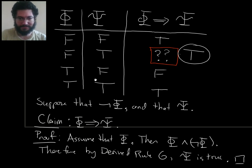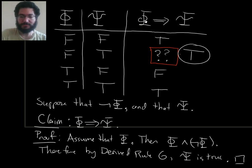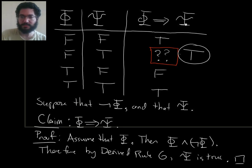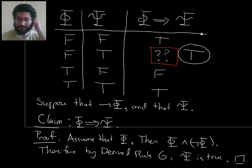To summarize the argument: if phi is false and psi is true, here's the proof that phi implies psi. If you assume that phi holds, then phi both holds and doesn't hold — that's a contradiction — which lets you deduce anything. In particular, it lets you deduce that psi holds. So overall, from an assumption of phi, you can deduce psi. Here's one reason this might be intuitive.